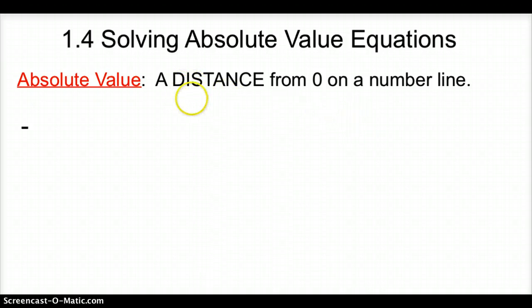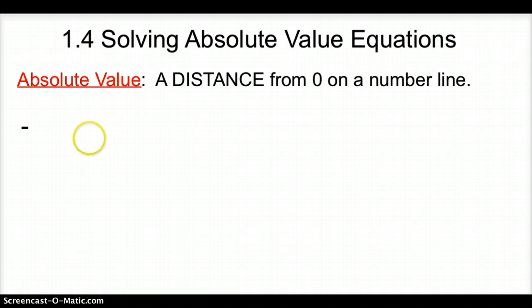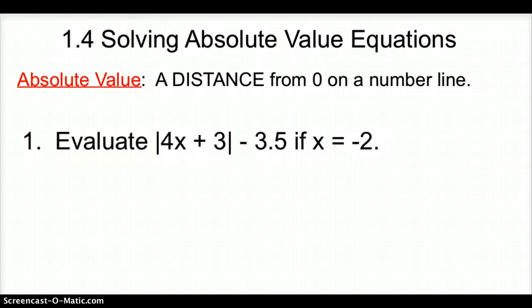Now, going back to the word distance — can we have a negative distance? If we go from Janesville to Mankato, which is a distance of 20 miles, is Mankato to Janesville a negative distance? I hope you said no. So that leads us into our first example, where we have to evaluate the absolute value of 4x plus 3, minus 3.5, if x is negative 2.